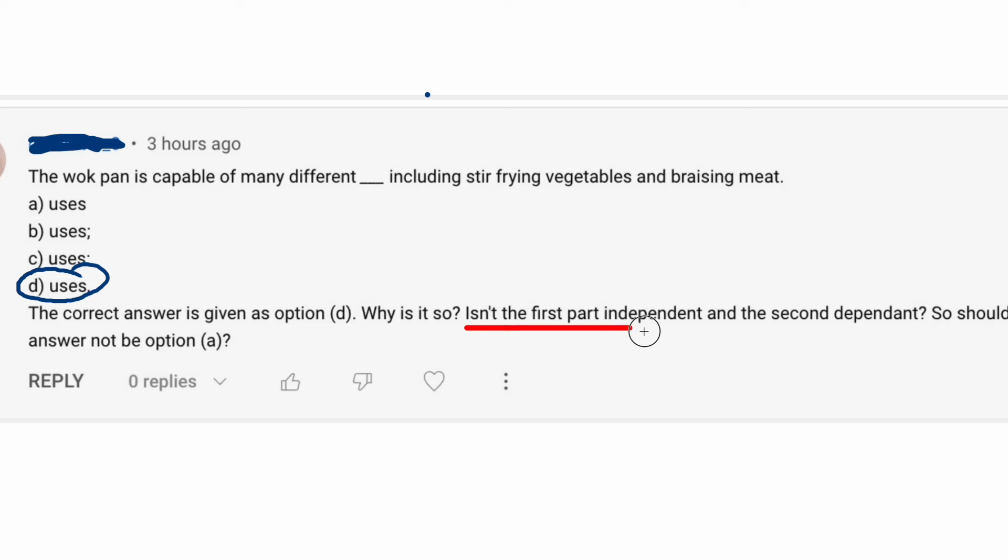So by the first part, which is independent, I believe the student means this part, up to and including uses. So I'm not going to underline it, but up to and including uses. And that is definitely an independent clause. The wok pan is capable. That itself would be an independent clause.